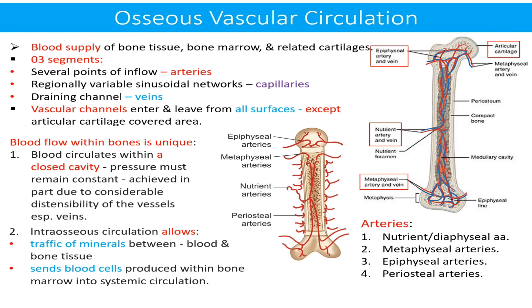There are four sets of arteries in a bone. These are: number one, nutrient or diaphyseal arteries; number two, metaphyseal arteries; number three, epiphyseal arteries; and number four, periosteal arteries.